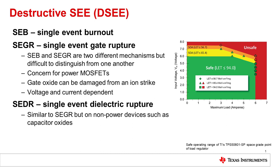TI space grade parts have already been characterized for their higher ratings and thus do not need to be derated. On the graph on the right we show the safe operating range for the TPS50601-SB space grade point-of-load regulator. The y-axis is the safe input voltage and the x-axis is the maximum load, and the green area is the safe operating range of the part.